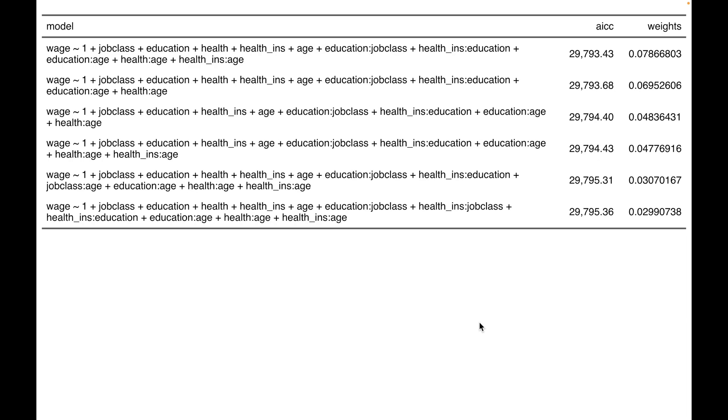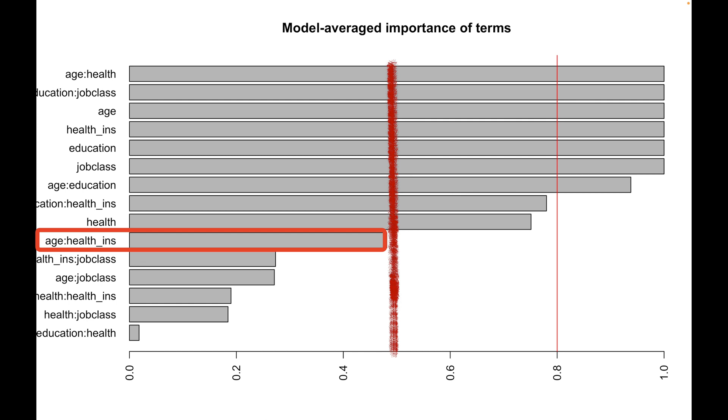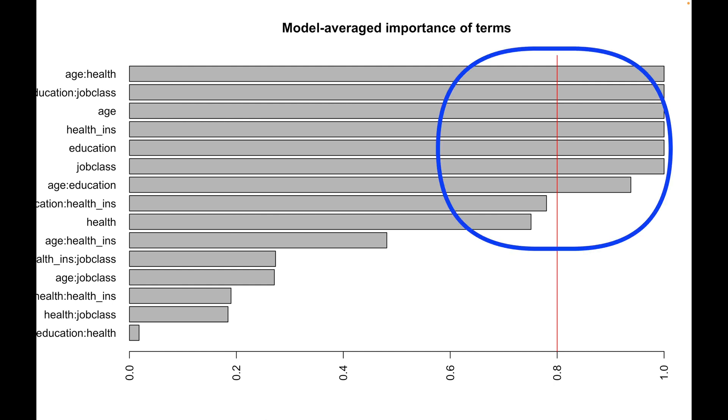Interestingly, the very first model contains the age-health insurance interaction, which has circa 50% importance. And it would be totally fine to go with that, but since we have so many terms with importance around 80%, I am happy to use only those,